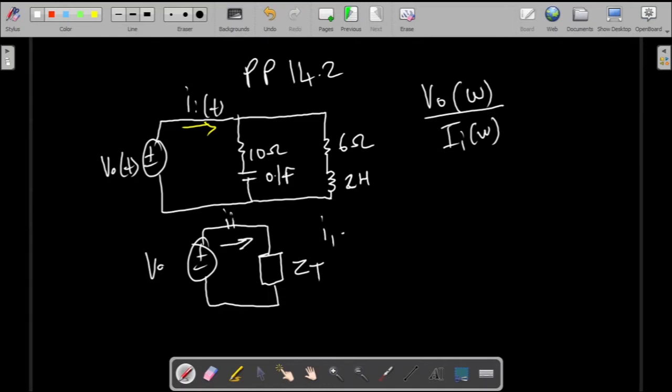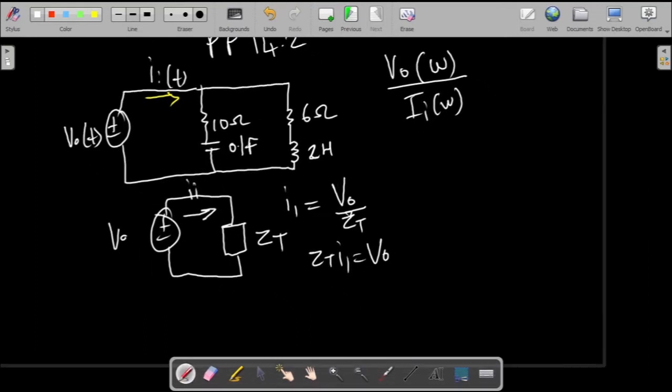And to find that I_I, you just say I_I using Ohm's law is equal to your V_O divided by Z_T, which is the total impedance. We want to find this, so to do that we just have to multiply both sides by Z_T and then divide each side by I_I.